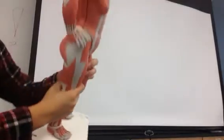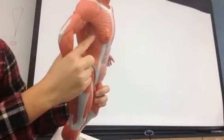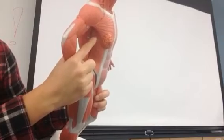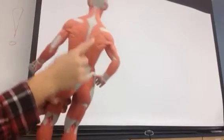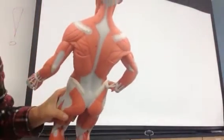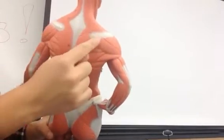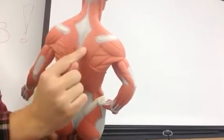Serratus anterior is the riblets on the side. So over here. That's serratus anterior. Trapezius is the big triangular thing on the back. So there. The big triangular thing on the back. That's trapezius.